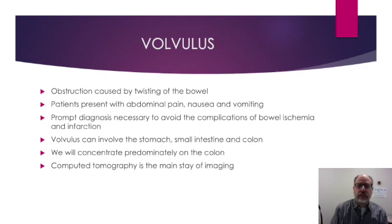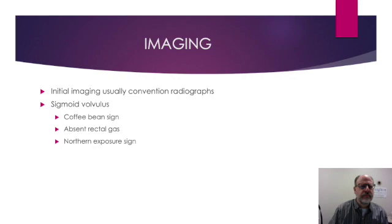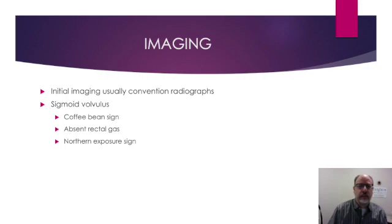Volvulus can involve the stomach, small intestine, and colon. In this talk we'll concentrate predominantly on colon findings. As in many things that present with acute abdominal pain in the emergency room, computed tomography is the mainstay of diagnosis. Initial imaging is often conventional radiographs, which can provide some findings suggesting volvulus, but it typically requires additional imaging, usually CT scan, to make a definitive diagnosis.